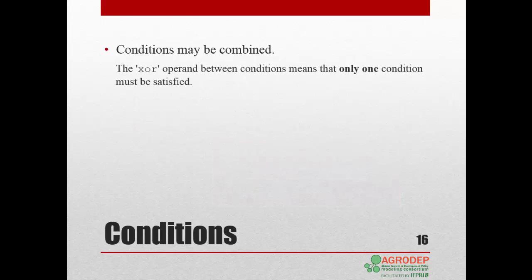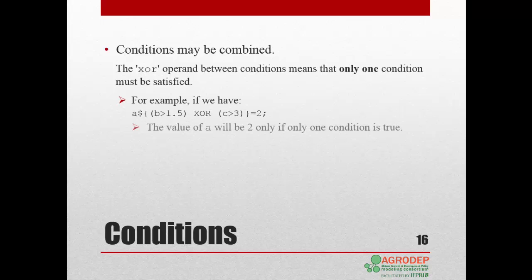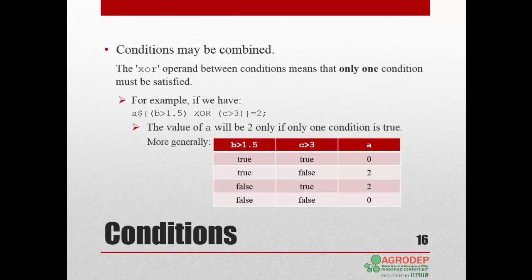Finally, using the XOR operand between conditions, this means that one and only one condition must be satisfied. For example, in this expression, if B is greater than 1.5 then C must not be greater than 3 for A to be equal to 2, and vice versa. More generally, we can build a conditional table showing all the possible combinations. Only when both conditions have the same outcome does A take the value 0.